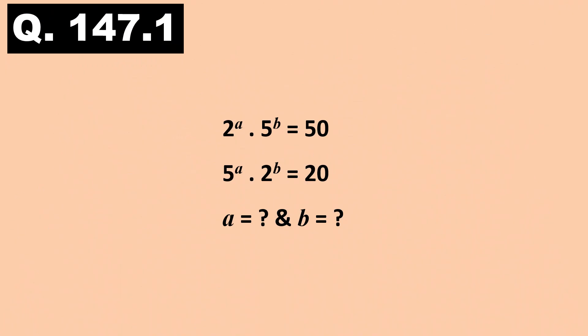Here is the first question, question number 147.1. It's a set of exponential equations. Bases are 2 and 5 and the exponents, a and b, are interchanged in the equations. Find the values. Timer starts now.